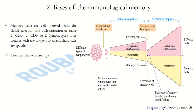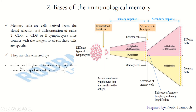What are the bases of the immunological memory? Memory cells are derived from the clonal selection and differentiation of naive T helper, cytotoxic T lymphocytes, or B lymphocytes after contact with the antigen to which these cells are specific. Memory cells are characterized by an earlier and higher activation capacity than naive cells, which is why the secondary response is rapid.